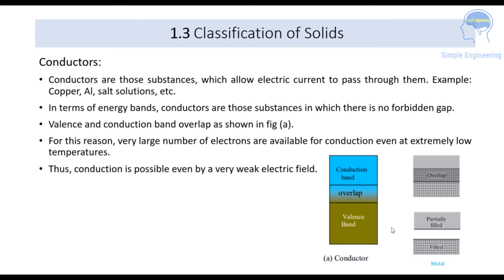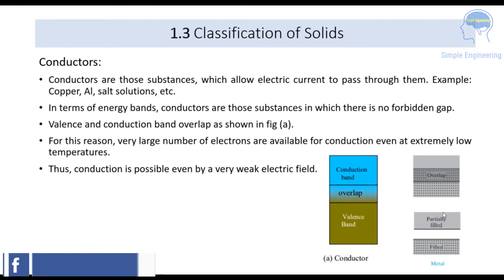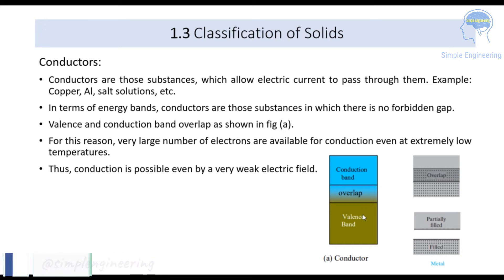The forbidden energy gap is zero, so the valence and conduction bands overlap. In this figure, the valence band is fully filled and the conduction band is partially filled, and they overlap — there is no forbidden energy gap. For this reason, a very large number of electrons are available for conduction even at extremely low temperatures, and conduction is possible even with a very weak electric field.